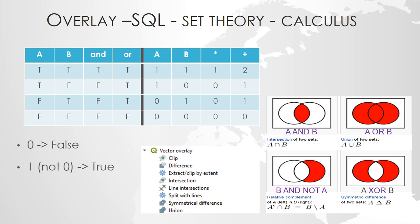Let's talk more about the relationship between these overlay operations and SQL, because they are both based on set theory. You can see that the intersection is the same as doing an AND, and the union is the same as doing an OR. You can clip with A or clip with B, which corresponds to those logical operations.